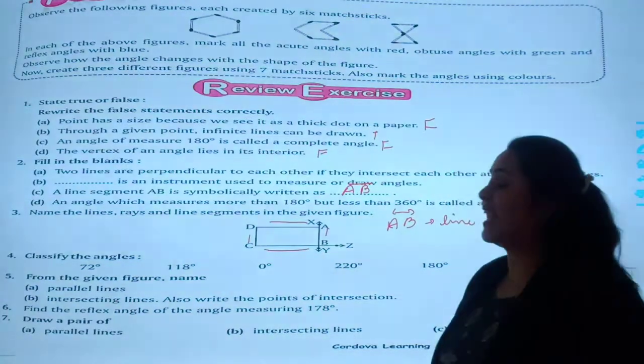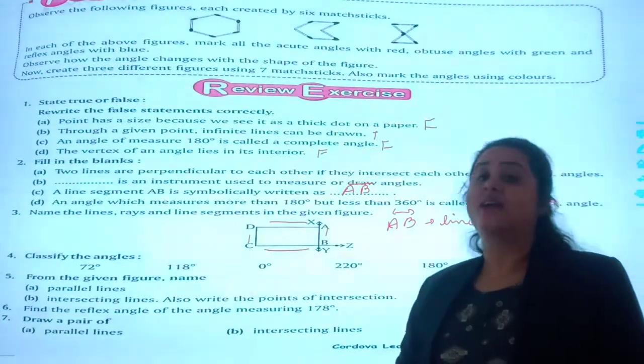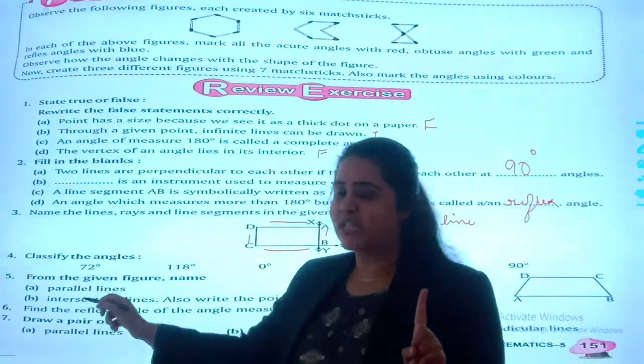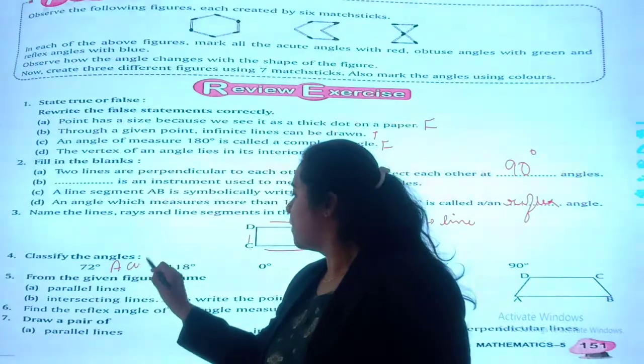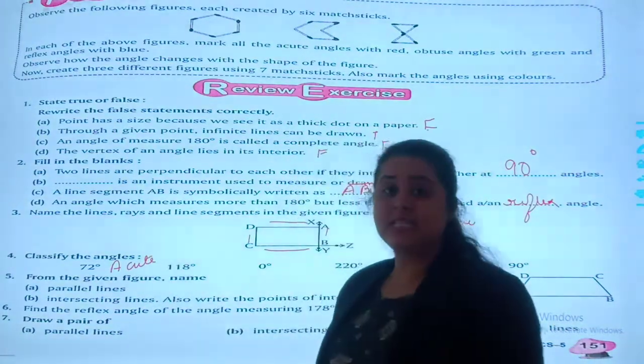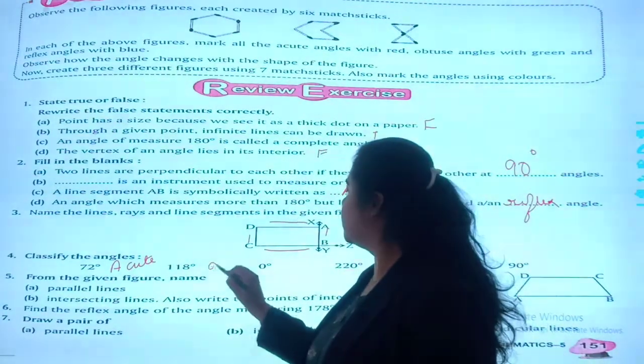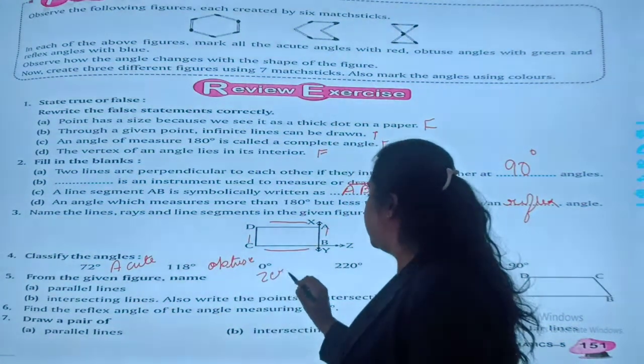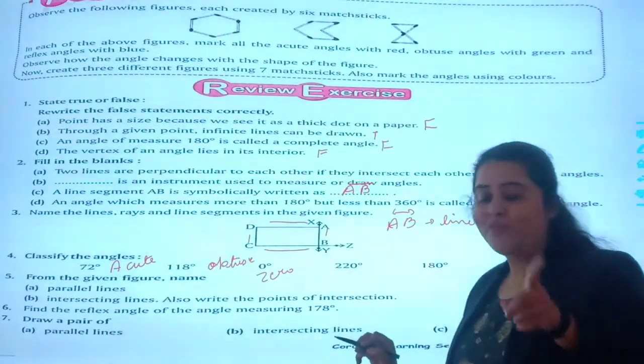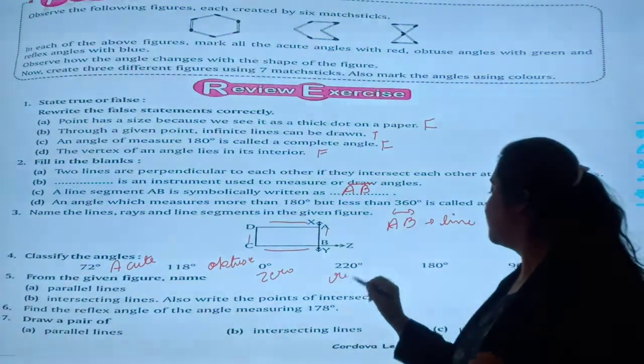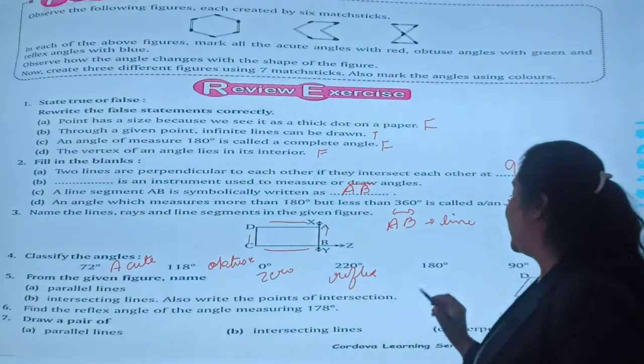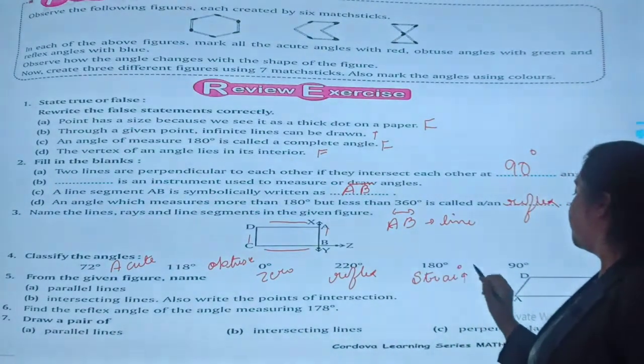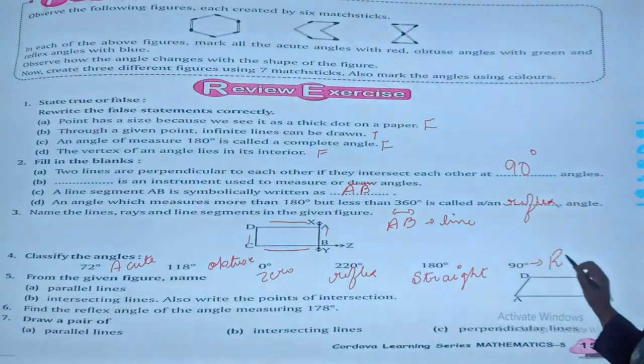So the question number 4 is, classify the angles. Classify means you have to write that 72 is an acute angle. 118, obtuse angle. 0, zero angle. 220, reflex angle. 180, straight angle. 90, right angle.